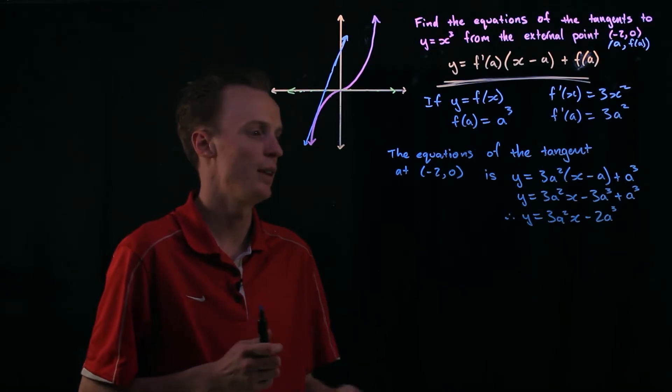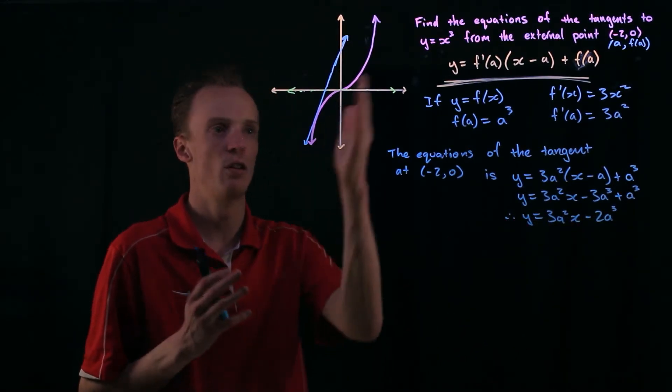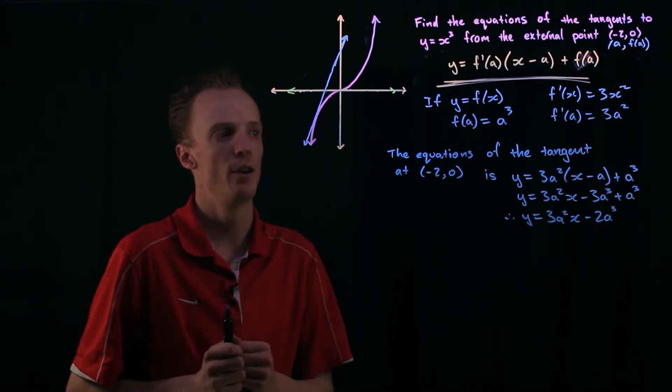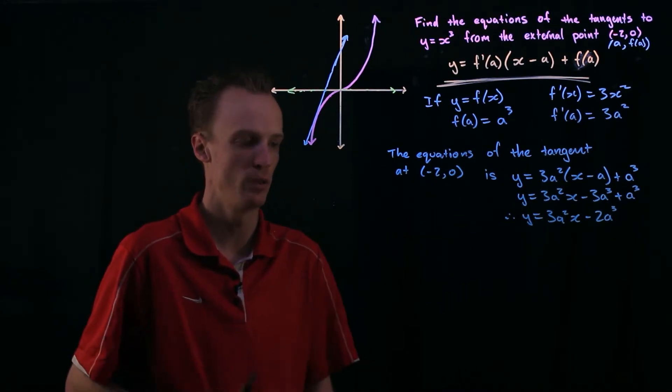So what we've described here is the linear lines for any tangent along this function. What I need to find though is which one of those lines passes through the point negative 2, 0.